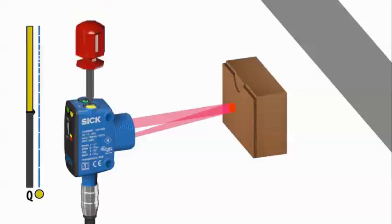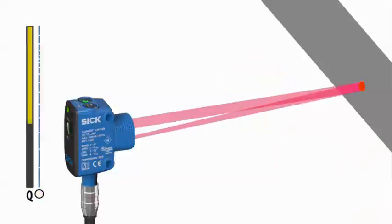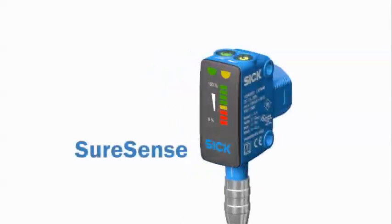The SureSense light bar provides you with information on where the switching threshold is adjusted with regards to the object and background, allowing you to maximize the stability once in operation. Using the SureSense signal strength light bar to optimize alignment and adjustment allows you to maximize the sensing reliability within your application, while increasing machine uptime and reducing maintenance costs.